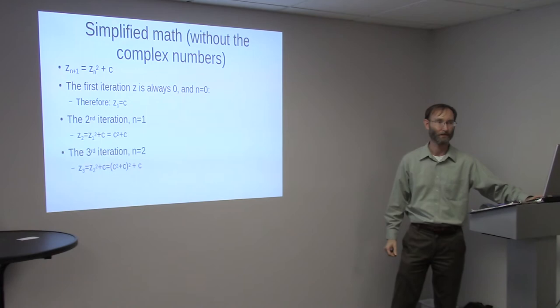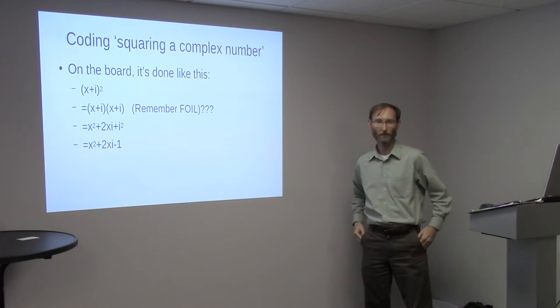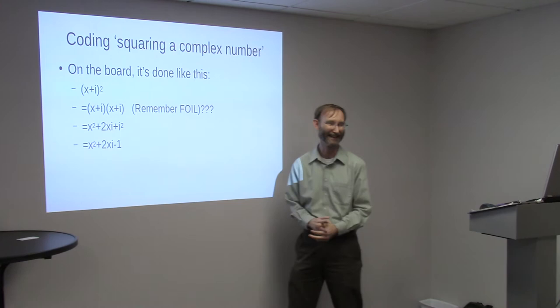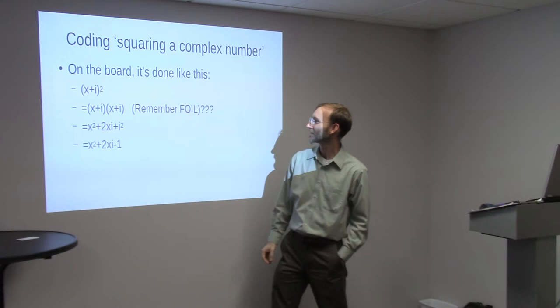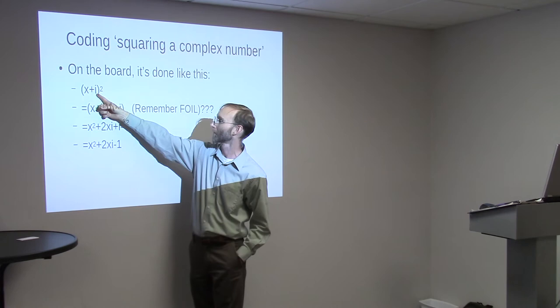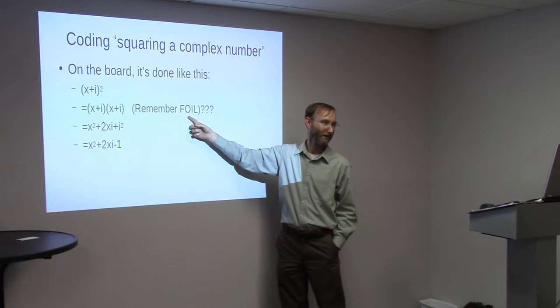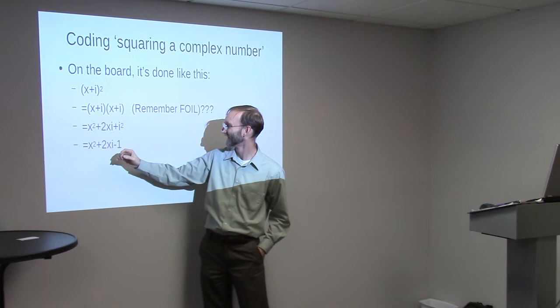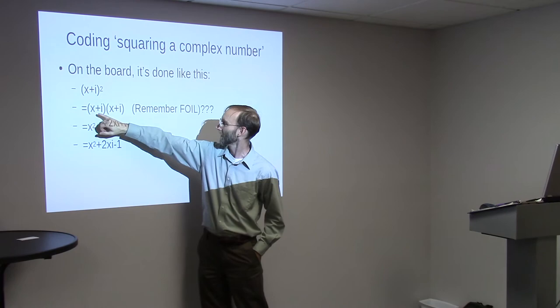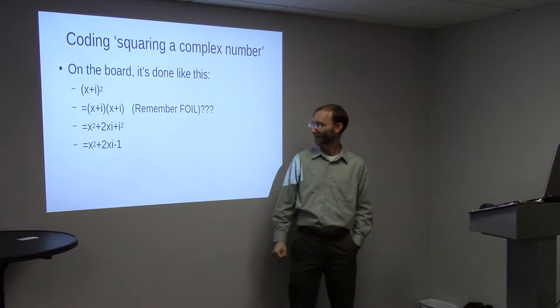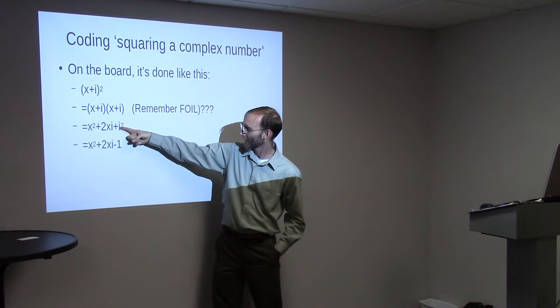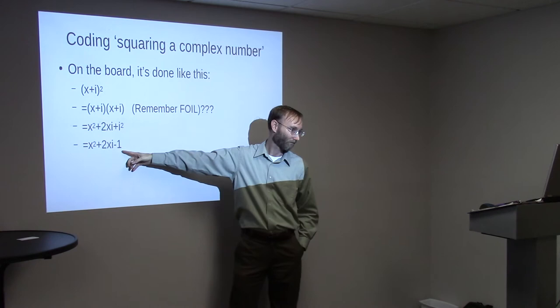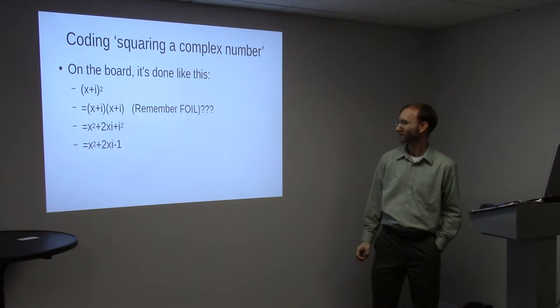That is the basis of the Mandelbrot set. You plug in x and i coordinates for each pixel on that screen. And if it diverges from a radius of 2, that determines whether or not it's in the set or not in the set. If we have a number like x plus i and we square it, remember FOIL? First outside inside last. We square this, we get x squared plus 2xi plus i squared. i squared is negative 1, so it's x squared plus 2xi minus 1.